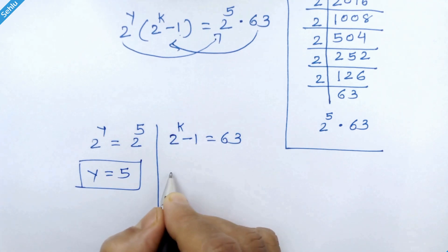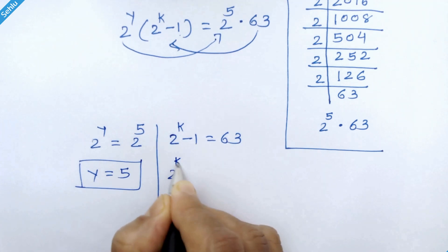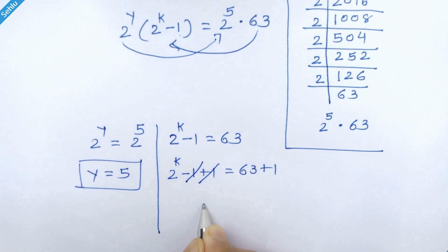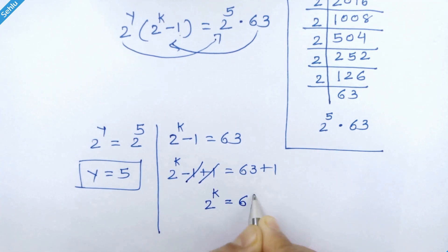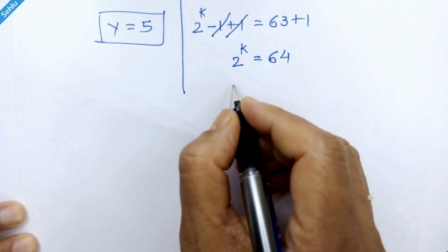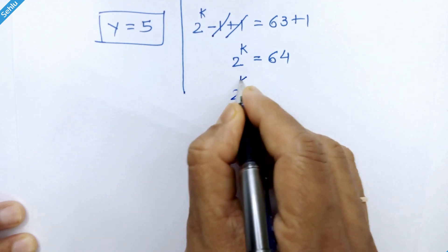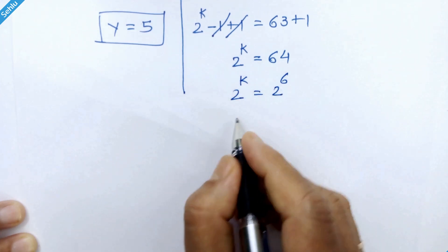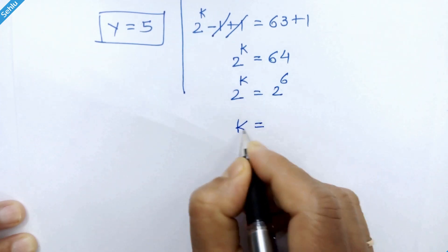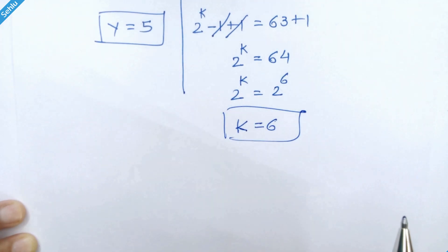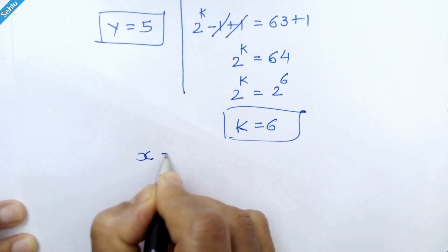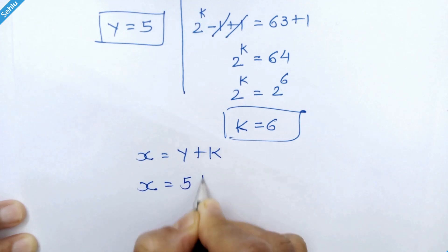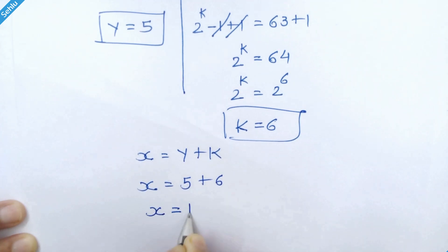Now we will add 1 to both sides: 2 raised to k is equal to 64. Since 64 is 2 raised to 6, and we have the same base on both sides, we can equate their exponents, so k is equal to 6. Now let's recall that we took x is equal to y plus k, so x equals 5 plus 6, giving x is equal to 11.